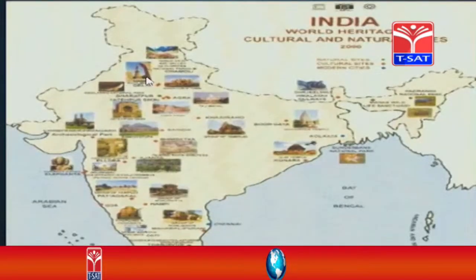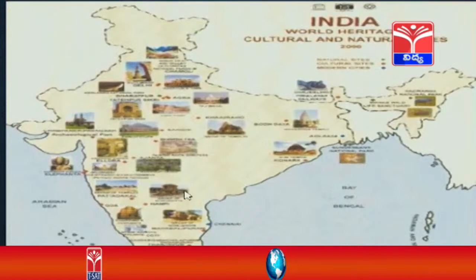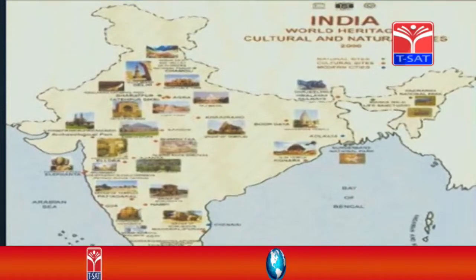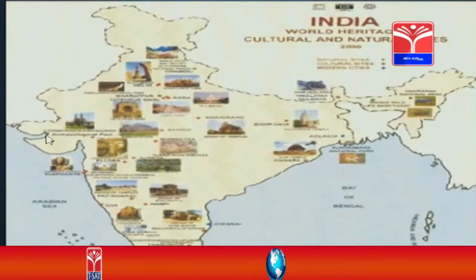Let us see some of them. At Delhi, this is Qutub Minar. At Agra, this is the Taj Mahal. When you come to the south, as given in this lesson, this is the Brihadeshwara temple at Tanjore. Throughout India, wonderful structures are there.